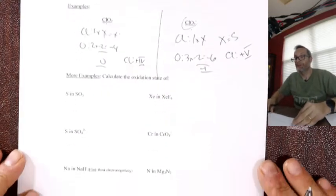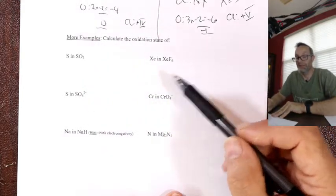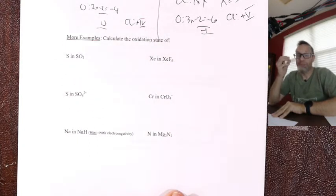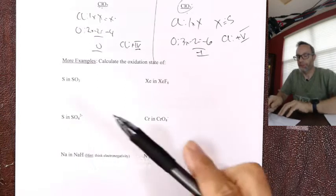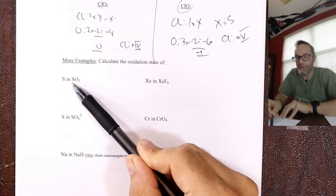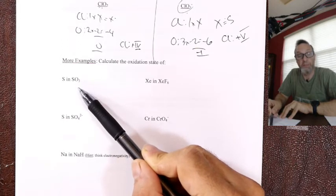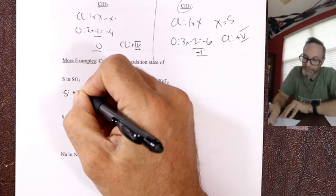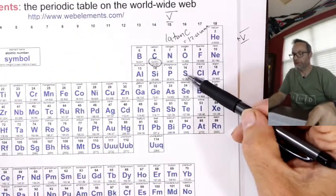Try to assign oxidation states in these compounds. For SO₃: oxygen beats sulfur, three minus twos on the oxygen side is minus six, so sulfur must be a plus six. Sulfur is in group six — same column as oxygen but weaker because it's lower down. This one loses as this one gains.